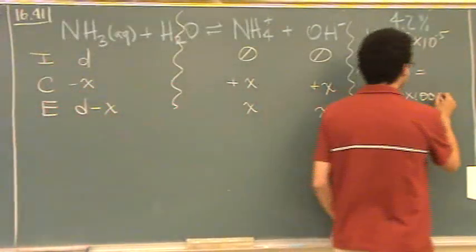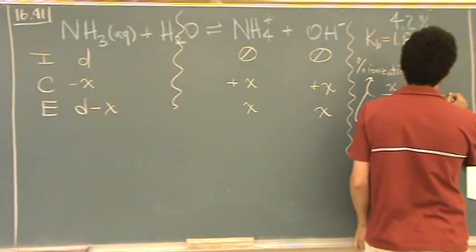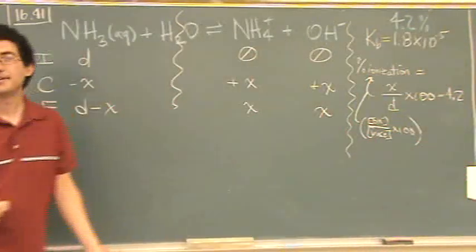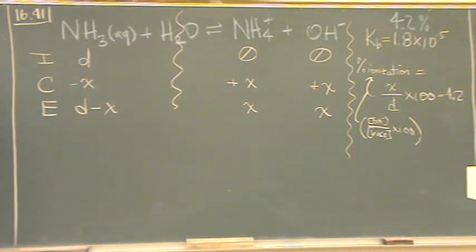The nice thing about this formula, we know this is 4.2. So we have an equation that relates x and d, which is really nice.